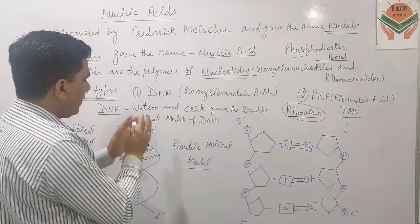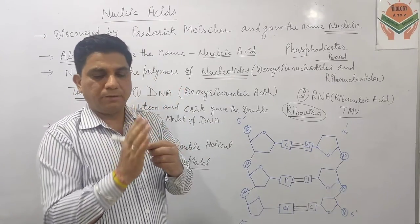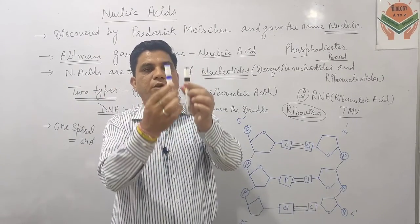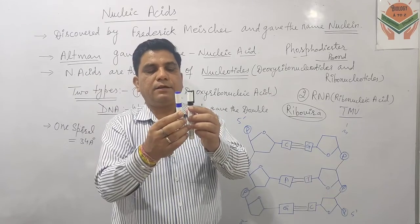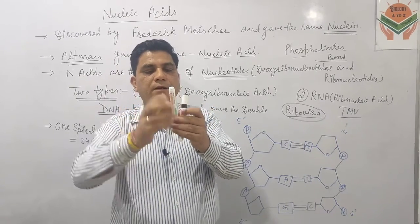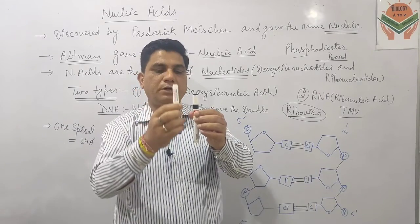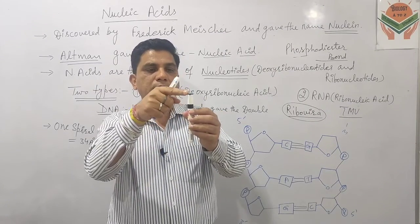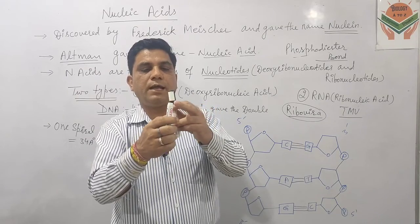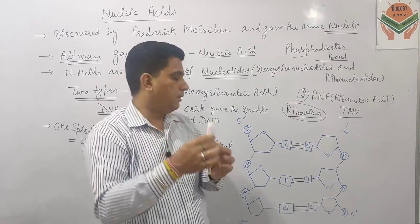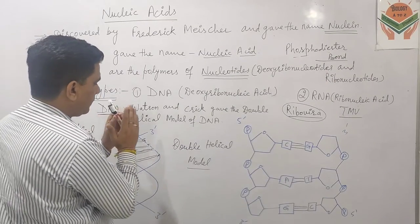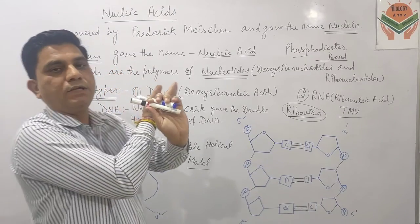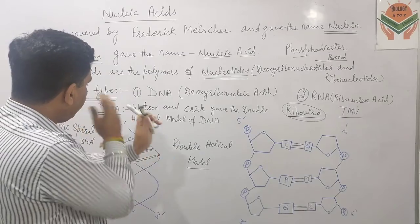Anti-parallel का मतलब ये है कि ये दोनों chains parallel तो हैं लेकिन एक का head end ऊपर की तरफ है तो दूसरे का head end नीचे की तरफ है। One runs from 5' end to 3' end whereas the second one runs from 3' to 5' end — यनि opposite direction में run कर रही हैं। ये एक दूसरे के parallel हैं और helically coiled हैं around each other।